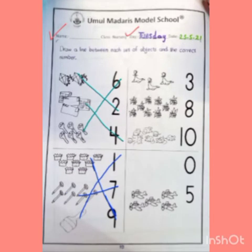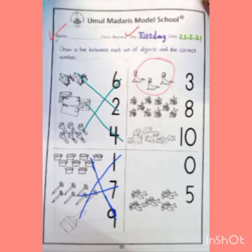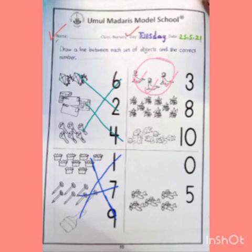अब हम आते हैं third group की तरफ। यह water animal है और इसका नाम है sea lion. Count with me: one, two, and three — three sea lions. तो हम sea lions को three number से match करेंगे।